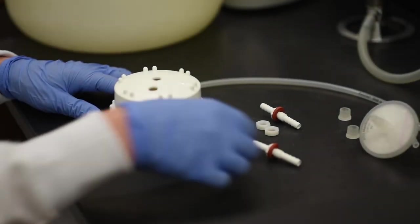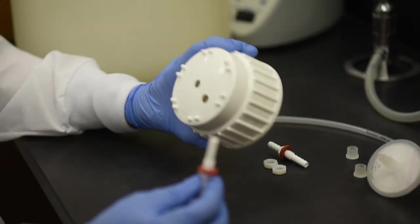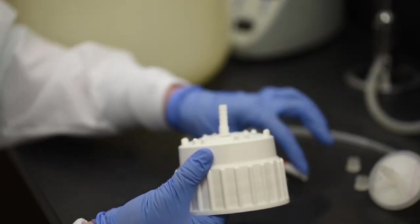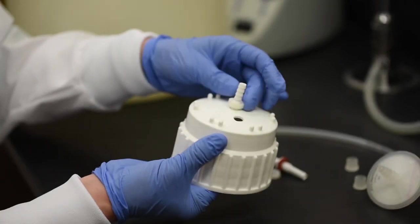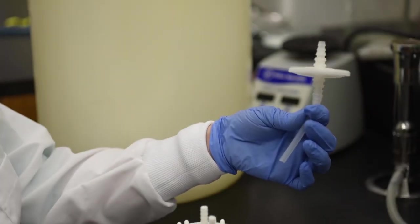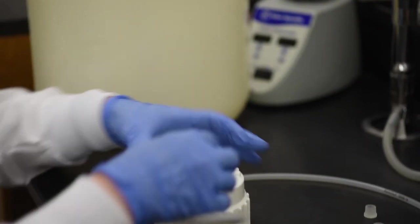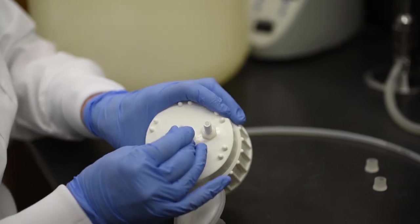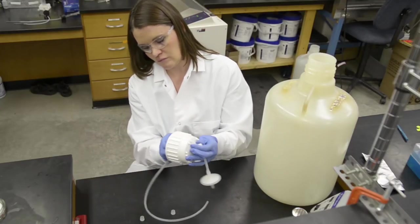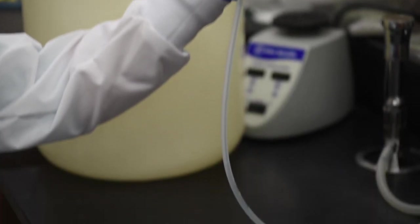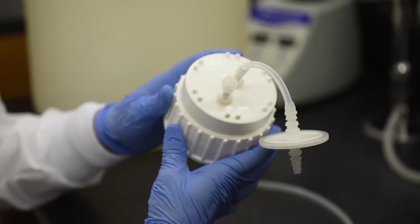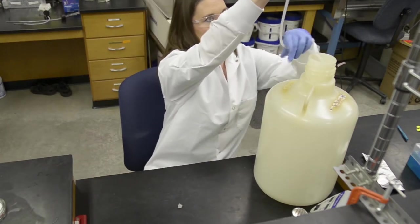Drill two holes in a 20 liter carboy lid. Install a 1 quarter inch barbed bulkhead fitting into each hole so that the nut is on the top of the lid. Add a short length of size 18 silicone tubing and a bacterial air vent to the top of one fitting. Add a length of size 16 silicone tubing to the bottom of the other fitting so that the tubing extends to the bottom of the carboy. Add the bulkhead cap to this fitting. Add reagent grade water to the carboy and sterilize appropriately.